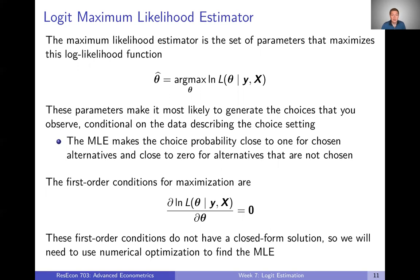The maximum likelihood estimator is the set of parameters that maximizes the log-likelihood function. We take the log-likelihood function and figure out which set of parameters maximizes it. That finds the set of parameters that make it most likely to have generated the choices we actually observe. On a more intuitive level, the MLE is basically trying to make the choice probabilities as close as possible to 1 for all chosen alternatives and as close as possible to 0 for all unchosen alternatives. We get the first-order conditions from this maximization problem by setting the derivative of the log-likelihood with respect to theta equal to 0.